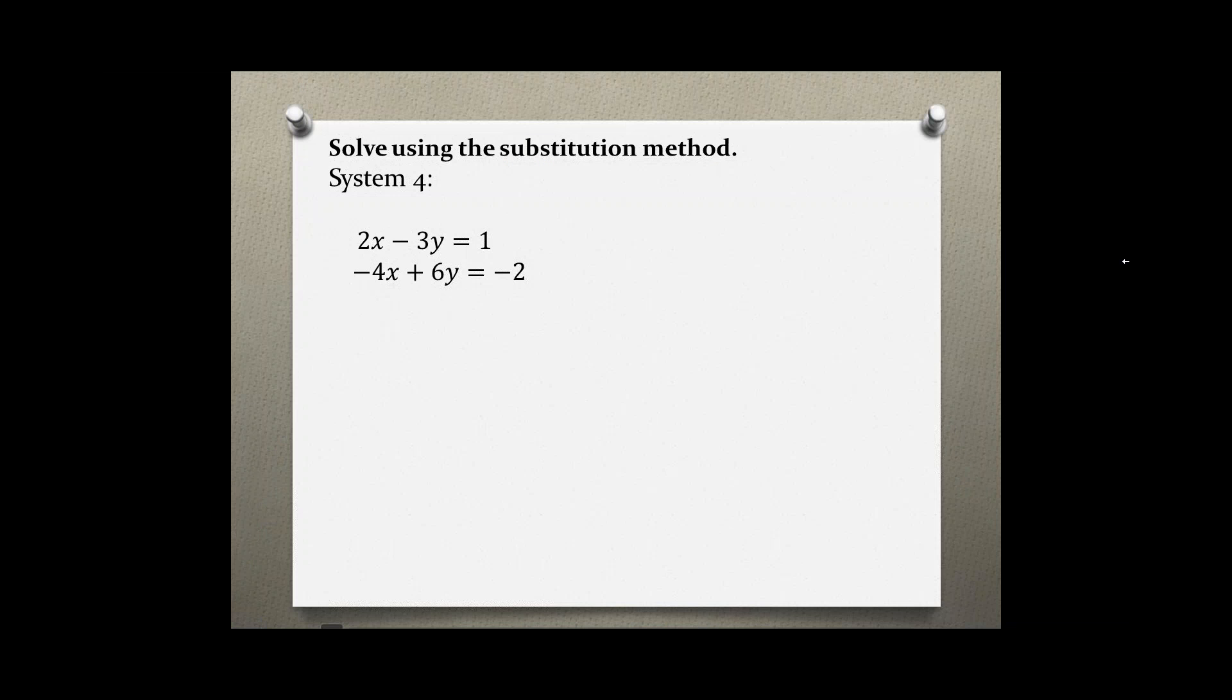Solve using the substitution method. System 4: 2x minus 3y equals 1 and negative 4x plus 6y equals negative 2.